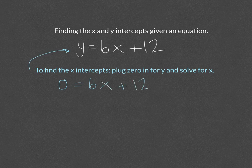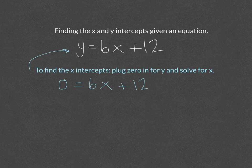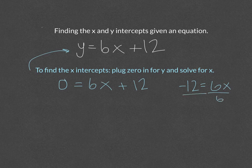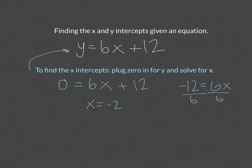And we solve for x by subtracting that 12 over. So negative 12 equals 6x and divide by 6. So that means that x is equal to negative 2. So the x-intercept is at negative 2.